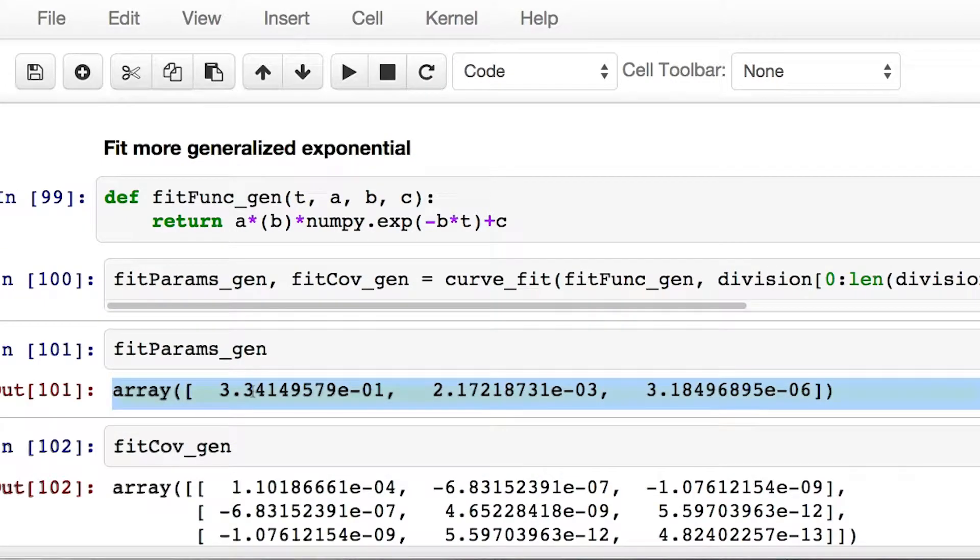So here are the parameters that it came up with for a, b, and c. Curve fit says the value for a is 3.34 times 10 to the negative 1, or 0.334. We have a new b value of 2.172 times 10 to the negative 3, which means in order to get our beta value, we just find the reciprocal of this.